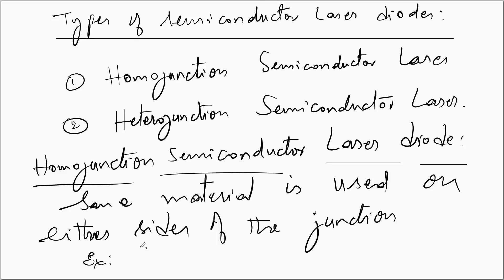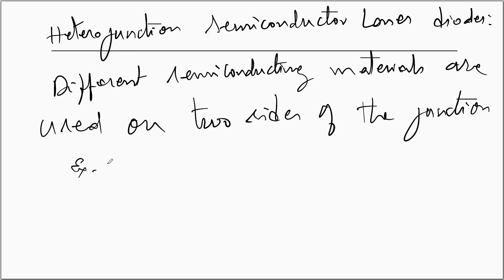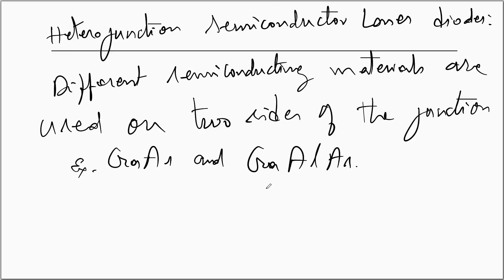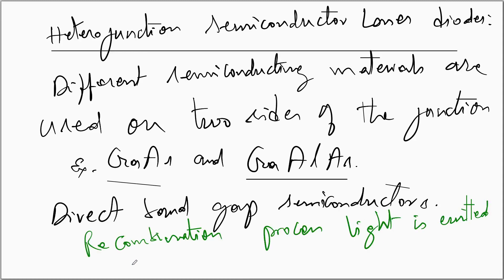An example of homo junction is gallium arsenide. In hetero junction semiconductor laser diodes, different semiconducting materials are used on the two sides of the junction — for example, gallium arsenide on one side and gallium aluminum arsenide on the other. Both gallium arsenide and gallium aluminum arsenide are direct bandgap semiconductors, meaning recombination of holes with electrons gives light. In indirect bandgap semiconductors, energy is released as both heat and light, so we choose direct bandgap semiconductors. The alloys of semiconducting materials are mostly direct bandgap semiconductors.